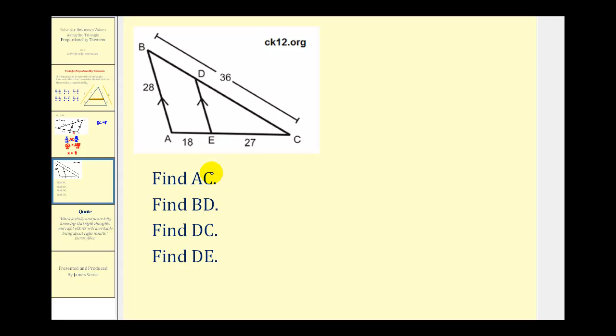The length of AC would be the length of this long segment here. So the length of AC would just be 18 units plus 27 units, which is equal to 45 units.